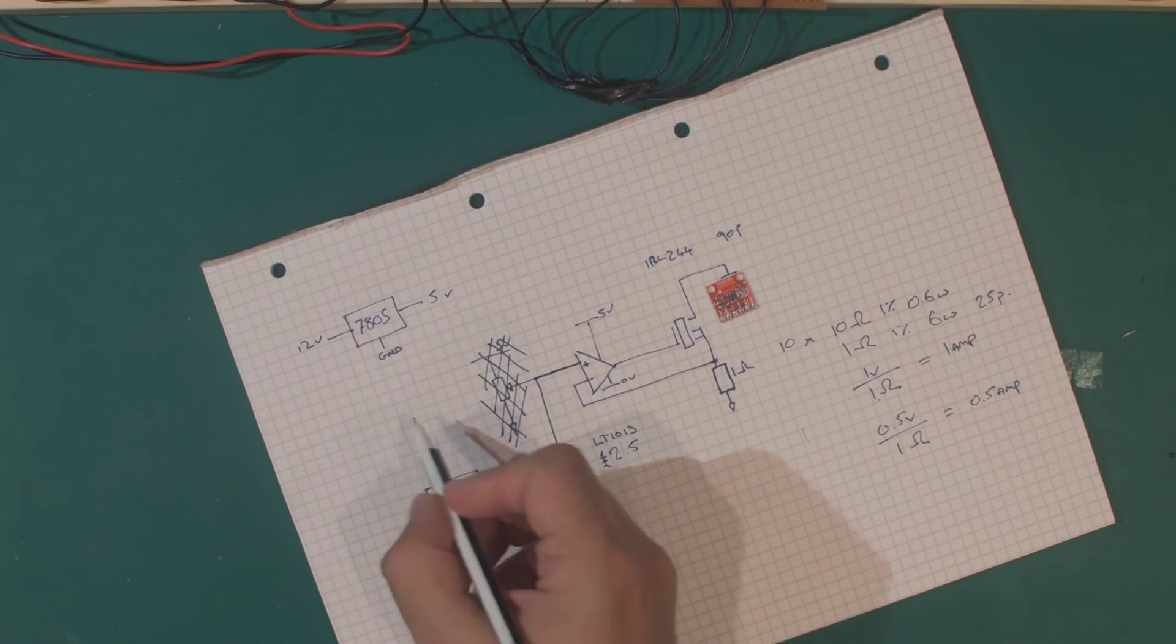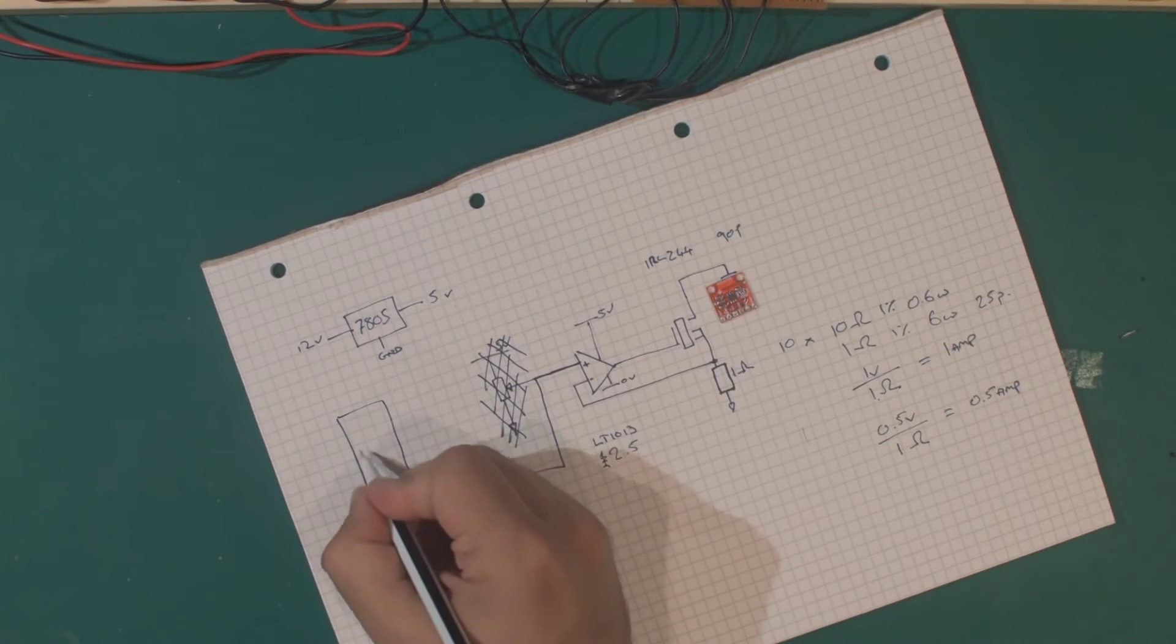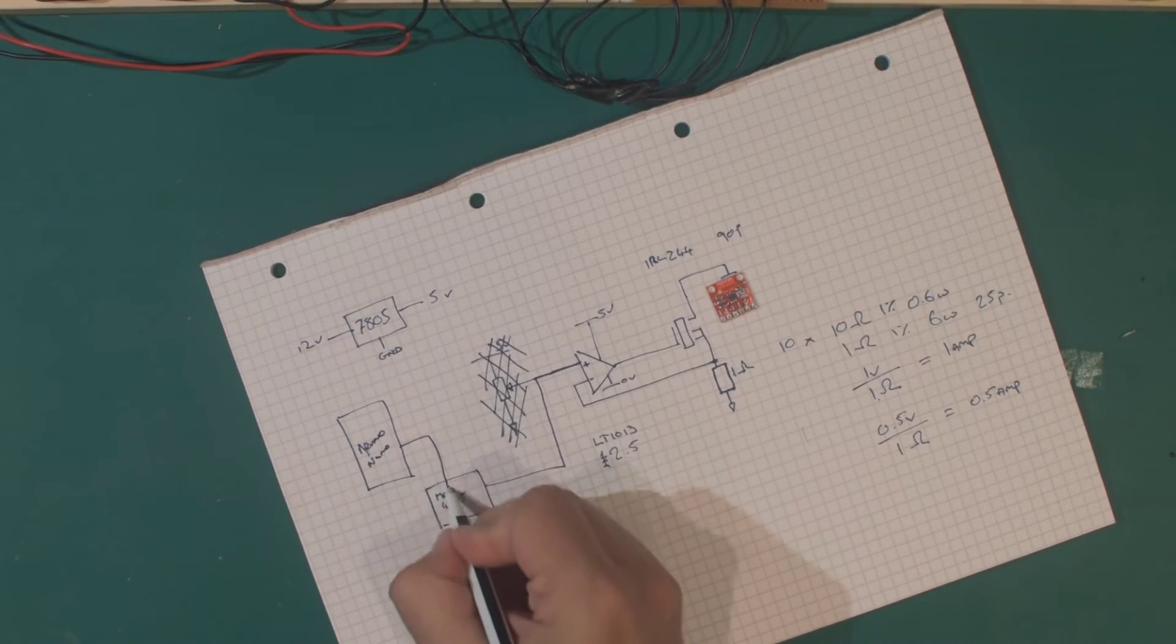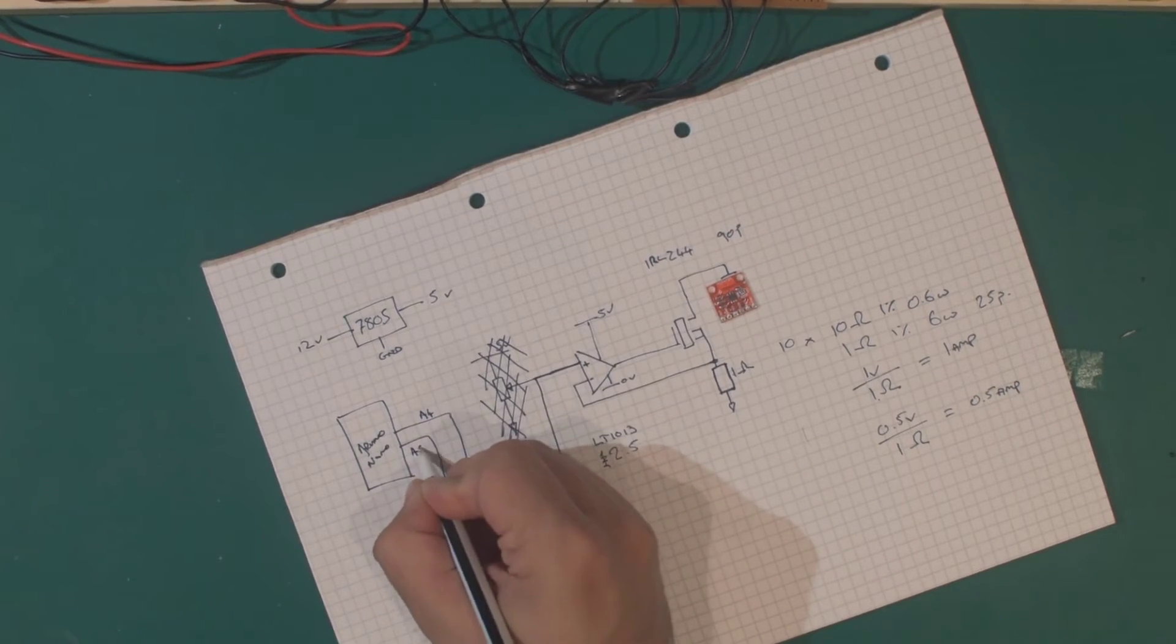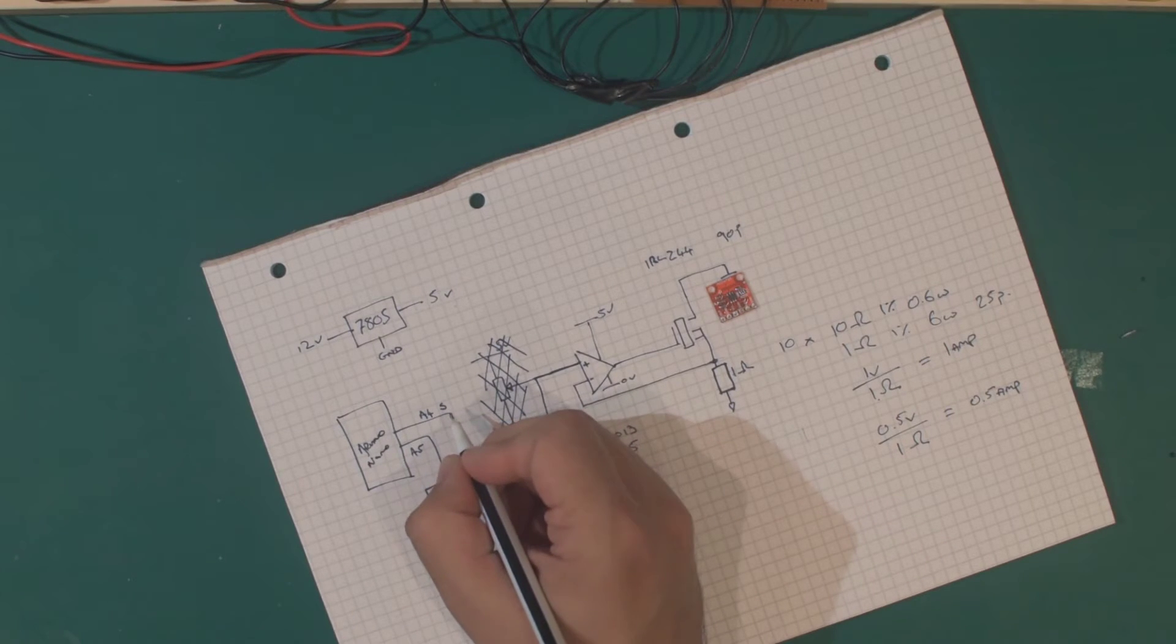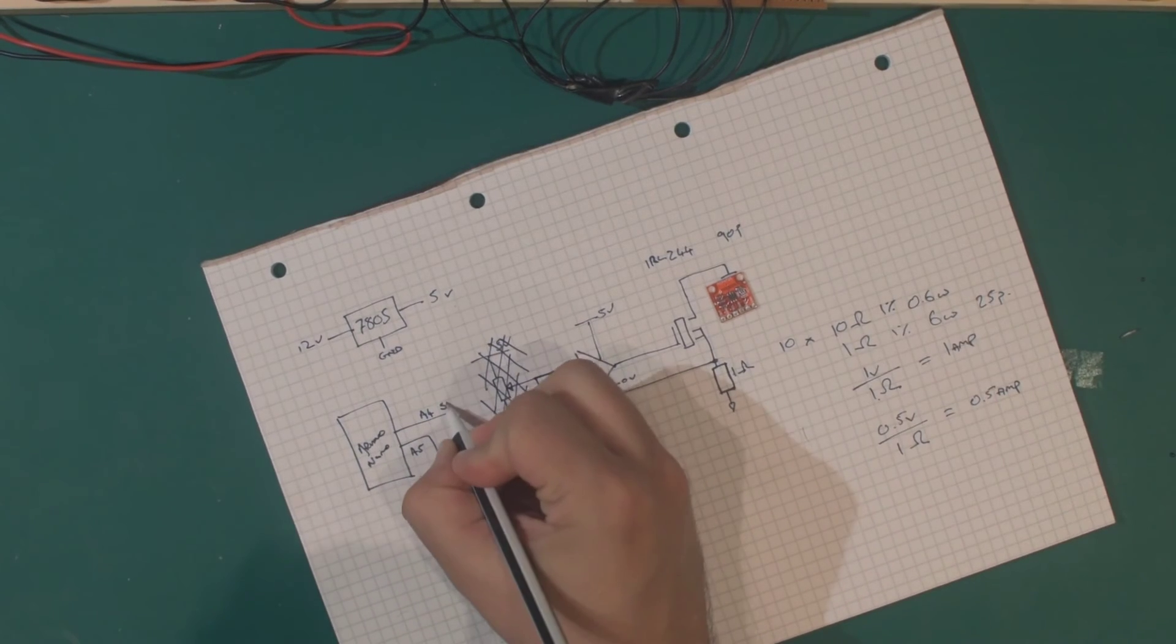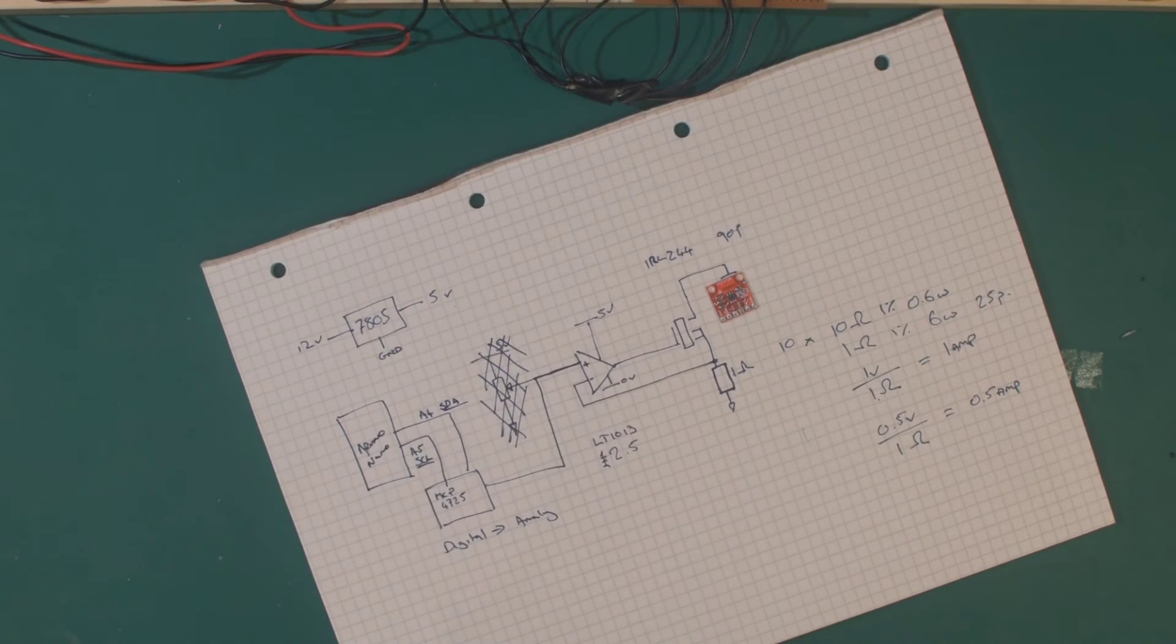This is an I2C device, so from our Arduino Nano we're going to take A4 and A5. I can never remember which way around it is, this is SDA and this is SCL, which we can then use to control the voltage at this point on the Op-Amp.